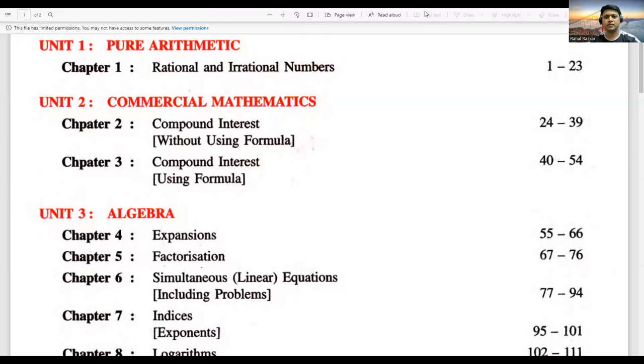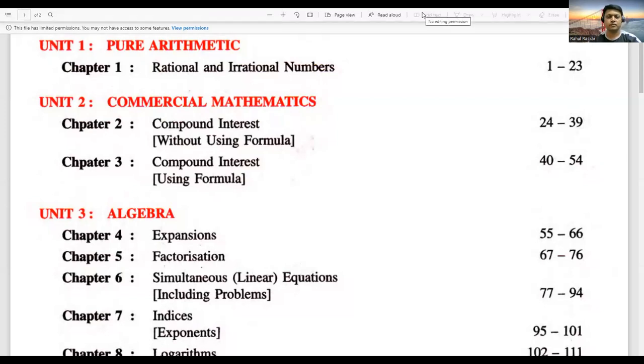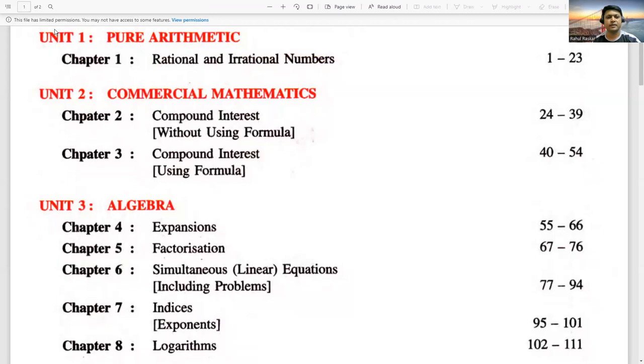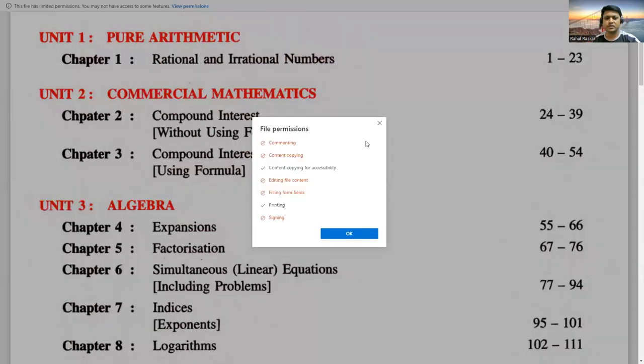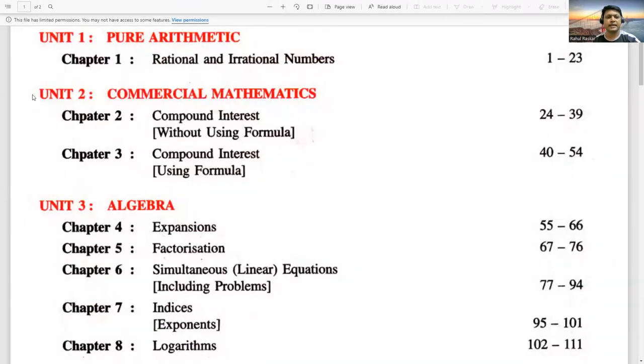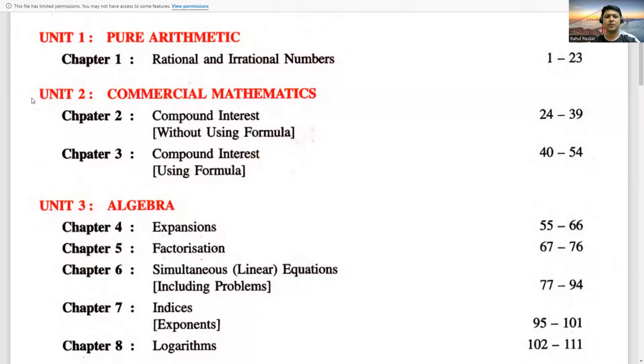So this is the syllabus of 9th Maths ICSE pattern. Unit first contains pure arithmetic operations, in that we will see rational and irrational numbers. Then second unit has commercial mathematics, in that we will see compound interest. We can see compound interest by using two ways: without using a formula and by using formula also.